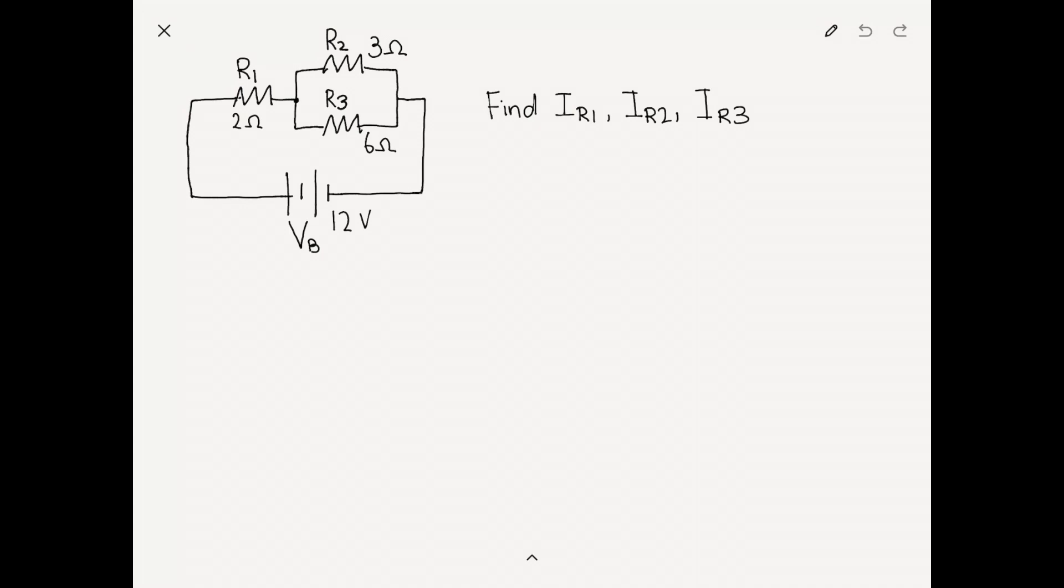In the problem, as shown on the screen, we're given the values of R1, R2, R3, as well as the voltage of the battery, Vb. Now we're told to find the current at R1, R2, and R3.